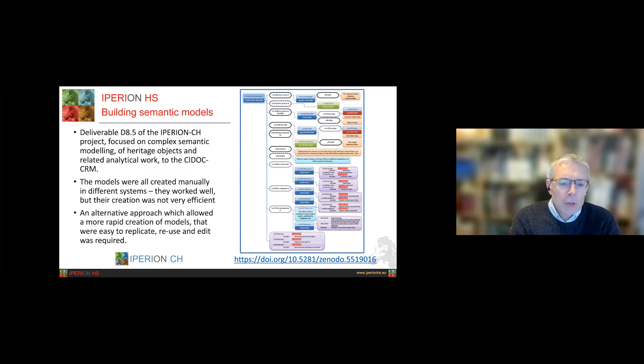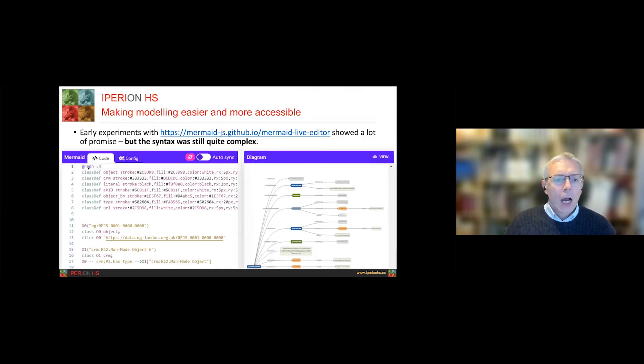So an alternative approach, which allowed more rapid creation of models that were easy to replicate and reuse, was really required. Following on from there, we experimented. There are lots of modeling tools out there, but we were looking at web-based ones to facilitate collaboration, and there was a particular model looking at an online JavaScript library called Mermaid, which can allow the rapid creation of fairly complex flow diagrams and models. But as you can see, the syntax was still quite complex.